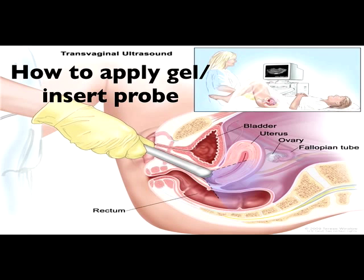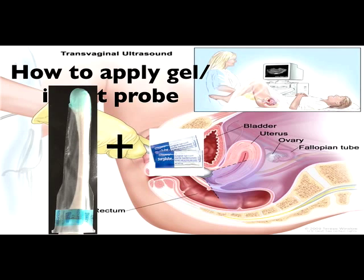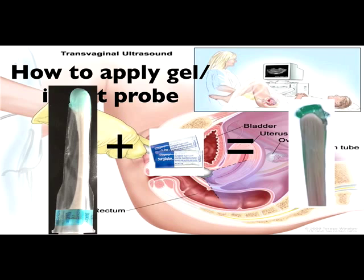The best way to apply gel is to first put ultrasound gel in the ultrasound probe cover. Alternatively, a non-lubricated condom can be used. Then apply sterile lubricant, which is less irritating to the patient, in order to prepare the transducer for scanning.